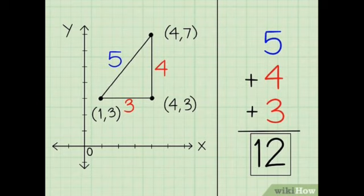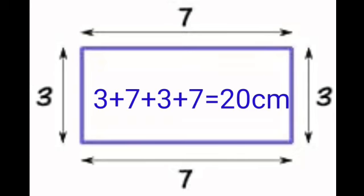Now here is the rectangle. In this, one side is 3 centimeters and the other one is 7 centimeters. We have to add all these sides. So 3 plus 7 plus 3 plus 7 equal to 20 centimeters. 20 centimeters is the perimeter of this rectangle.